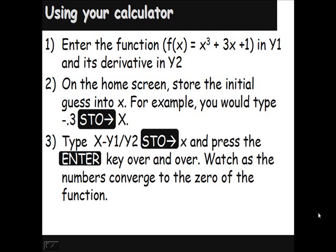Then what you do is you type x minus Y1 over Y2. So this is actually just Newton's method right here: it's the previous guess minus f of that guess divided by f' of that guess. And then we're going to store that into x. And then what we do is we just keep pressing enter over and over again, and it keeps running this calculation with each new guess. And then you should see the numbers on your screen start to become the same number. It'll be accurate to as many decimal places as your calculator can handle.